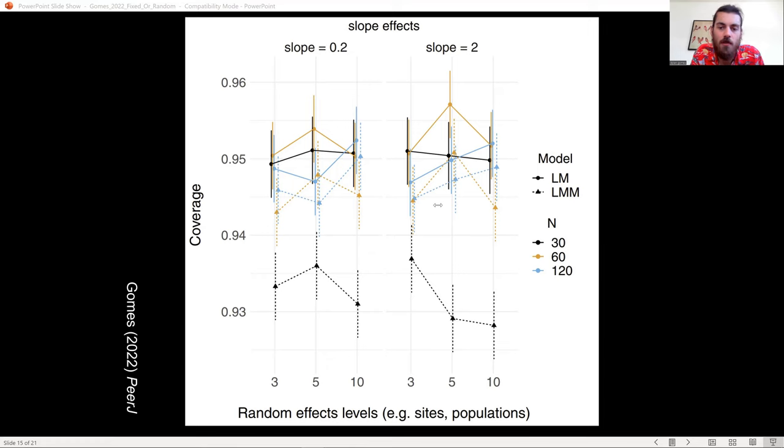The shapes and line type denote whether the grouping variable, so site or year as our running examples, was fit as a fixed effect, which are circles and solid lines, or as random effects, which are triangles and dotted lines.